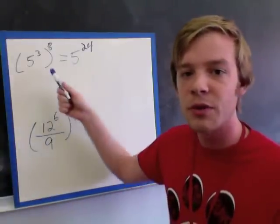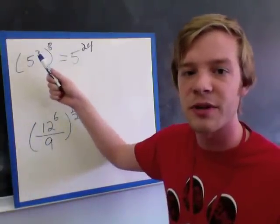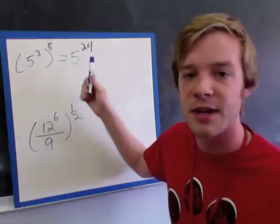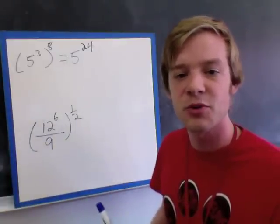A real simple example. We just take our two powers, the one inside is multiplied by the one outside, 3 times 8 gives us the power of 24.